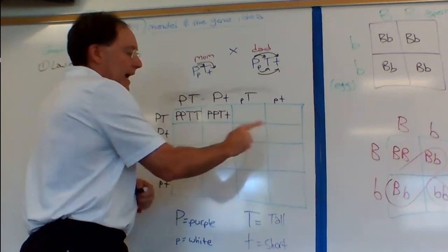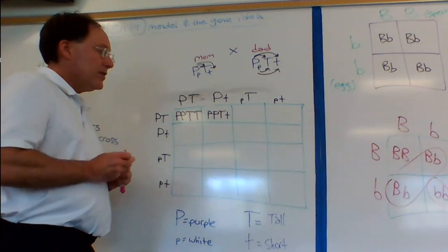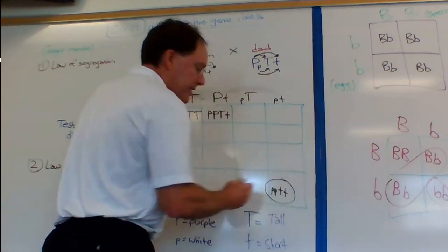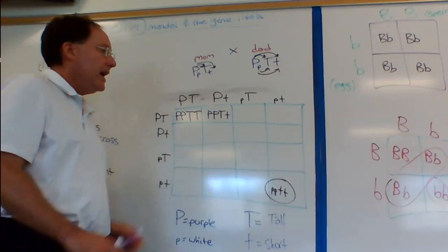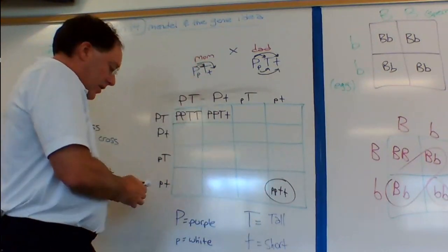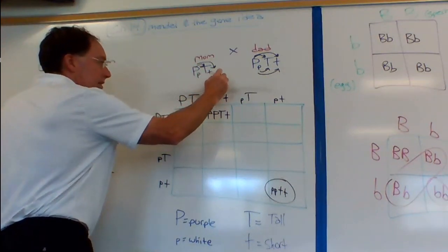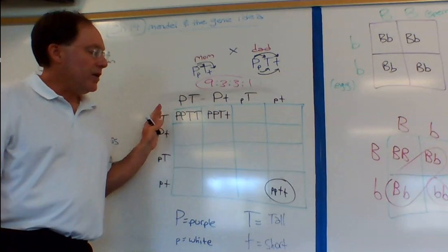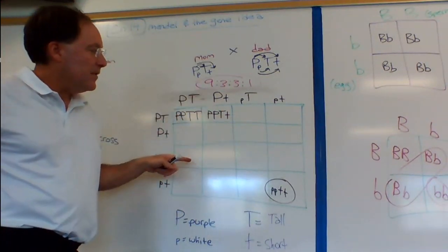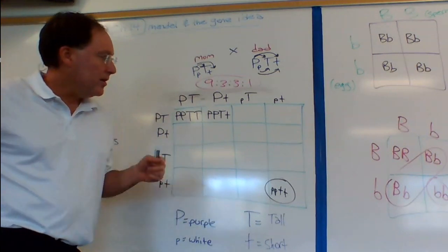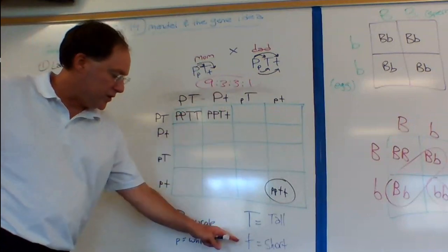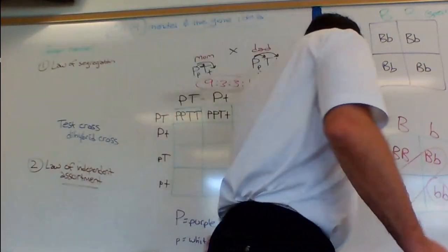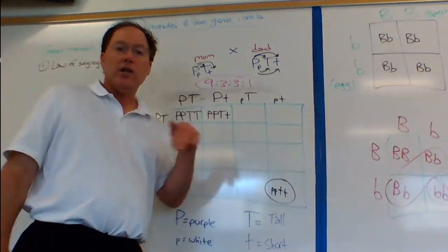What you get in a cross like this is a 9:3:3:1 phenotypic ratio. 9 out of 16 combinations give you purple and tall offspring. 3 will give purple and short. 3 will give tall and white. And 1 will give white and short. Memorize that 9:3:3:1 phenotypic ratio for a dihybrid cross, because I'm going to show you in just a moment how that can be changed.